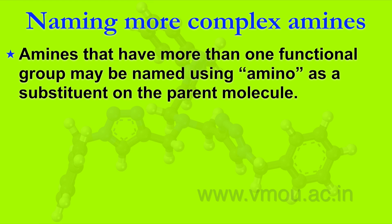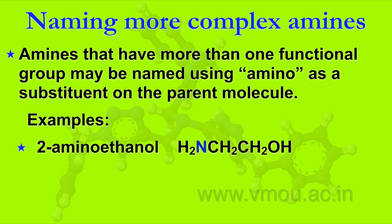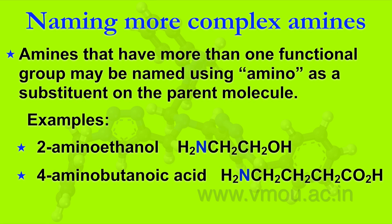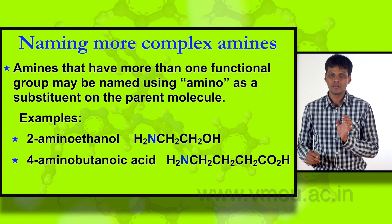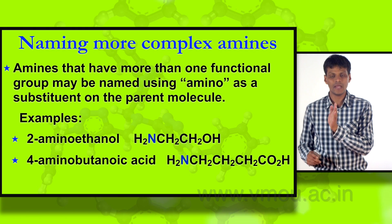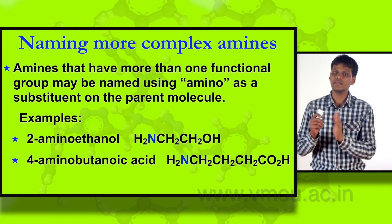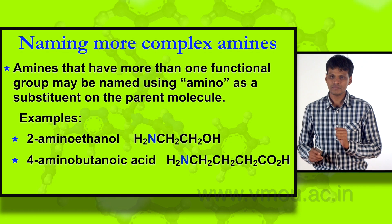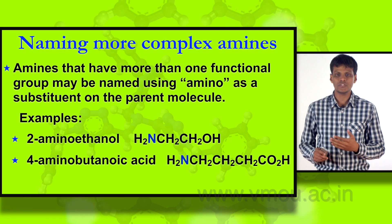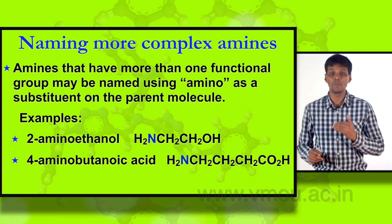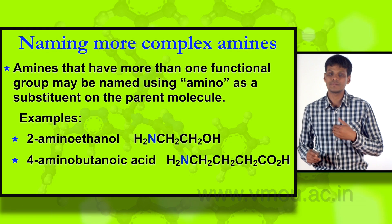Moving to a more complex case, amines that have more than one functional group may be named using 'amino' as a substituent on the parent molecule. For example, 2-aminoethanol has the formula CH2CH2OH joined with NH2. The important thing to note is that when more than one functional group is present, we use the prefix 'amino', not 'amine'.